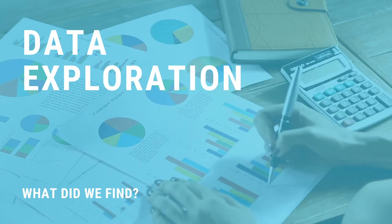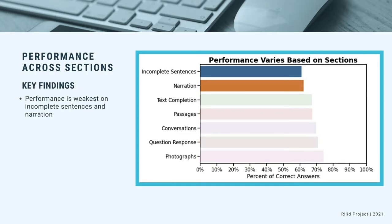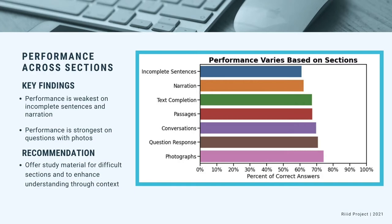Samuel will talk about some of the key findings uncovered while exploring the data. We explored the data to identify whether different variables hindered, improved, or had no significant impact on student performance. Identifying these variables is essential to improving our model's predictive capabilities and informing what changes RID can make. Student performance was weakest on questions involving incomplete sentences or narrations, as indicated by the two bars at the top of the graph. Conversely, students performed strongest on questions containing photographs. We suggest that RID offer study material for their most challenging content, along with material that develops students' ability to understand English based on contextual clues, which may help when photos aren't available.